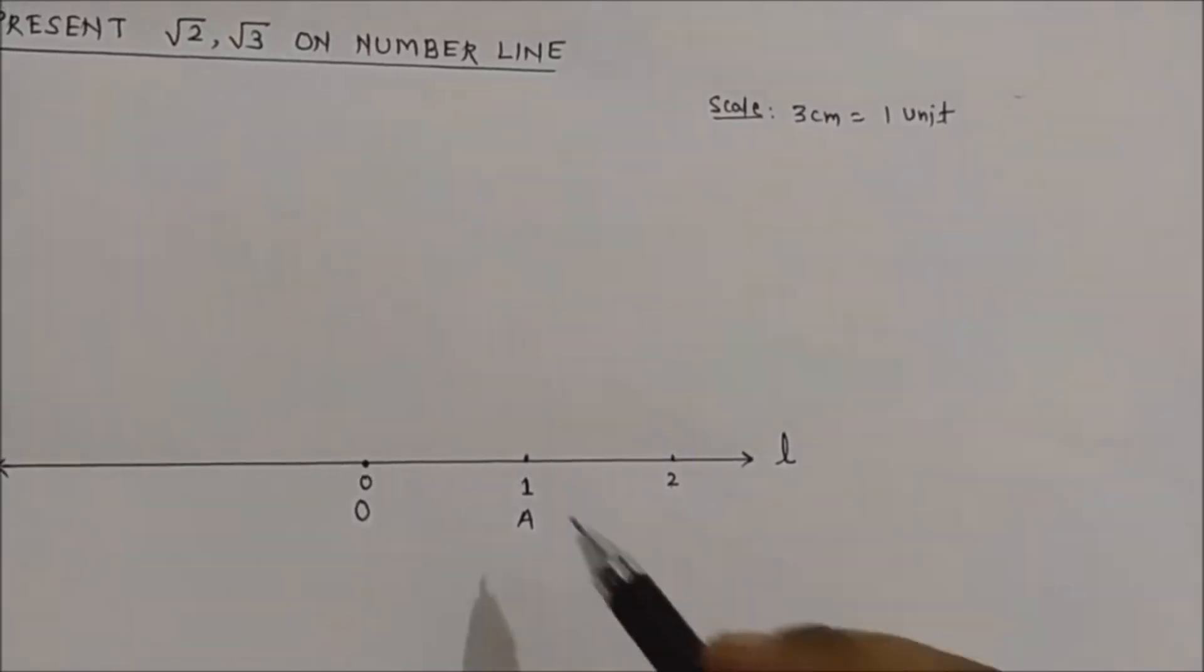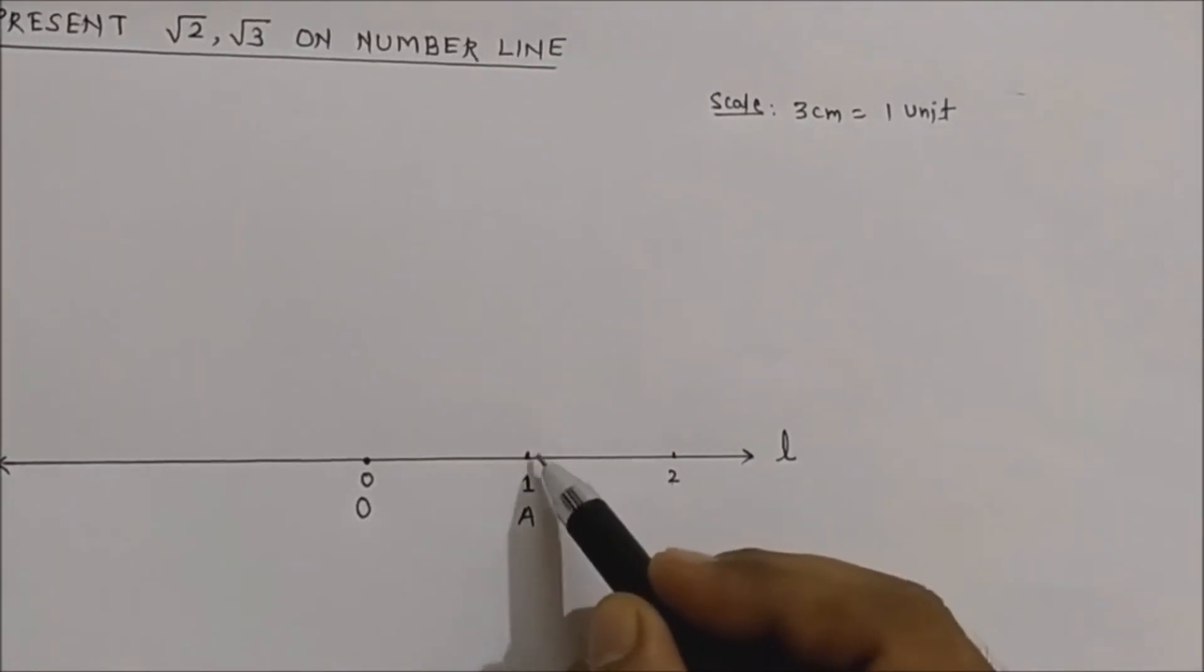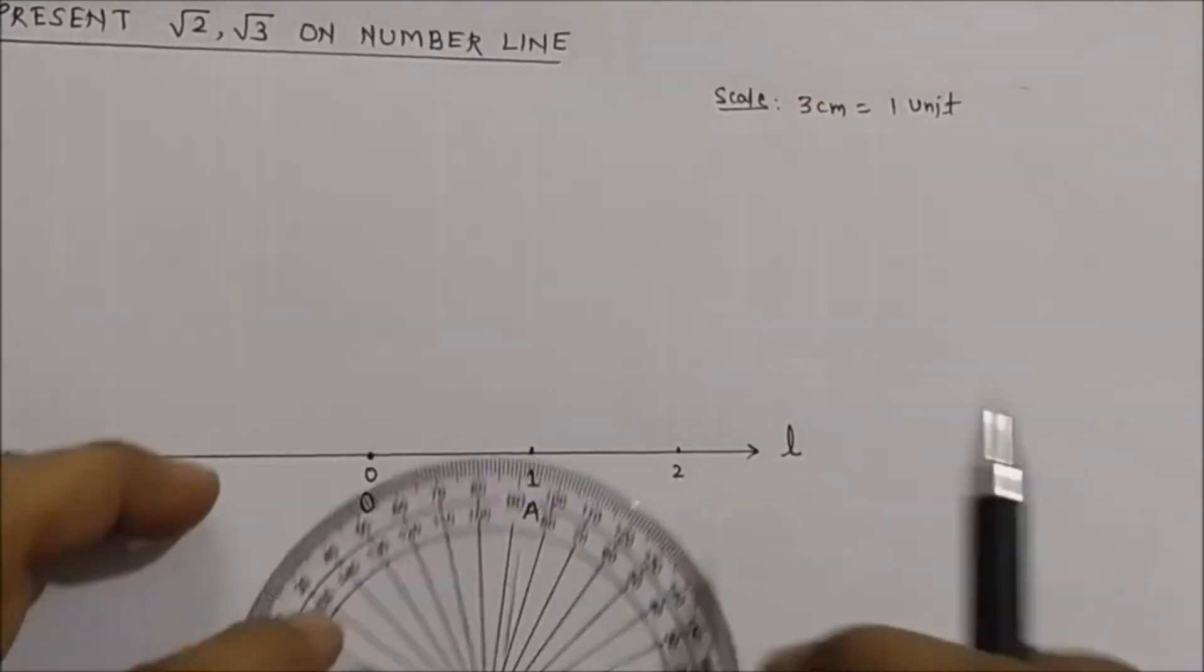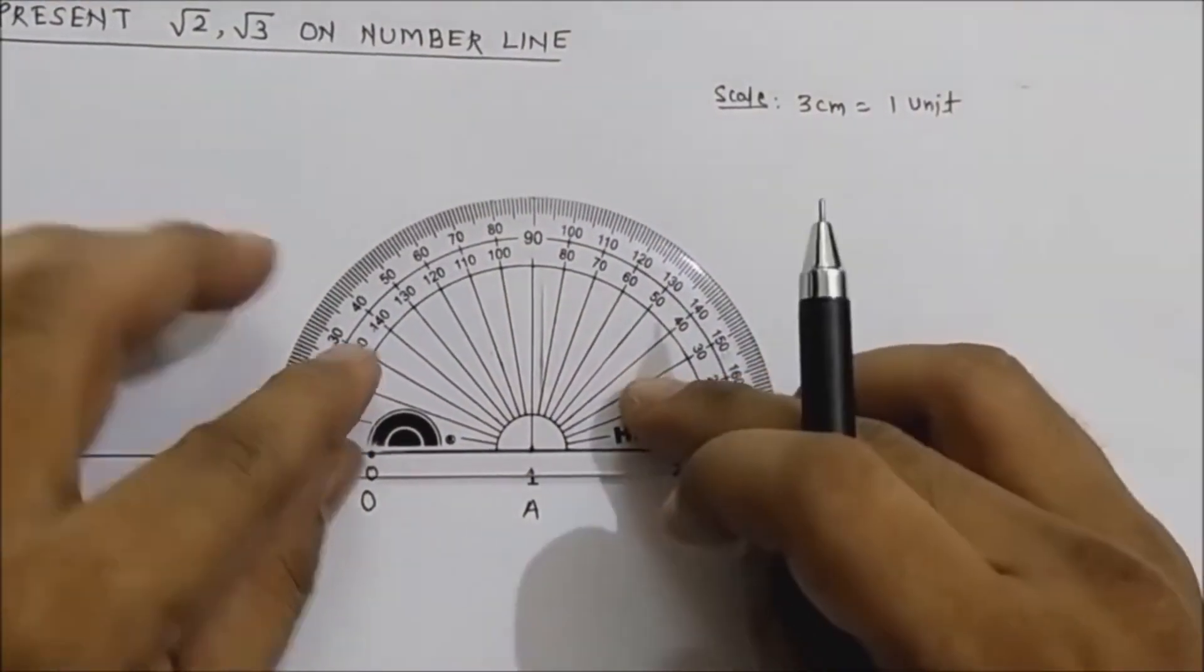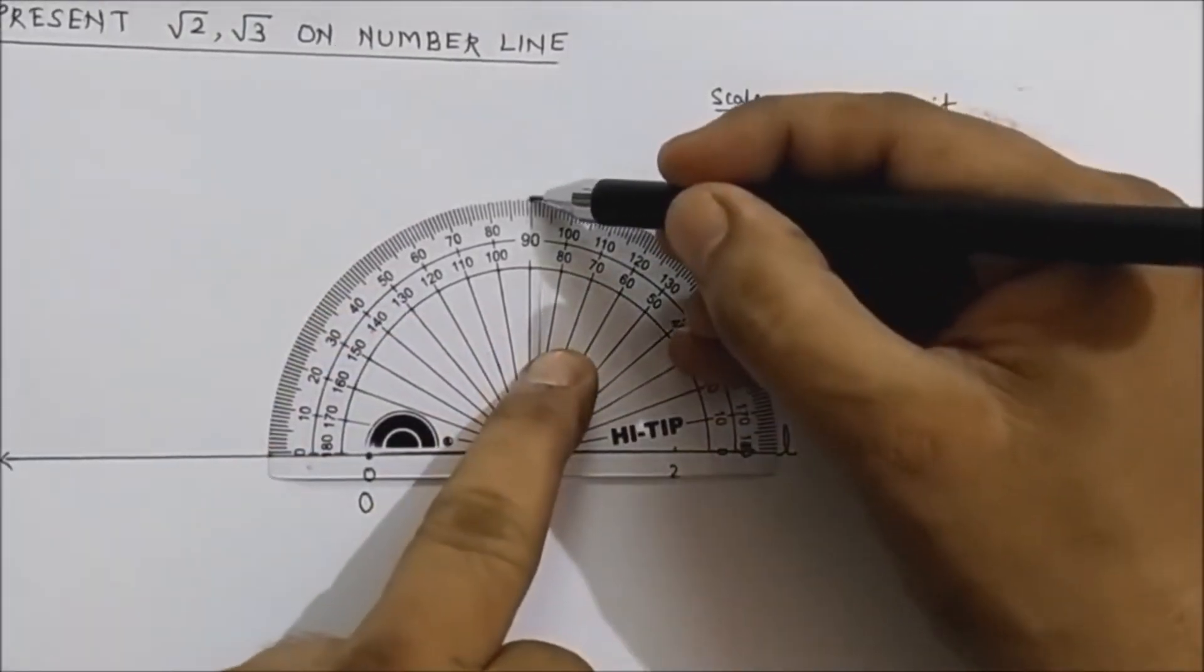Next step: at this point A, you are going to drop a perpendicular. Take the protractor and drop a perpendicular at this point.